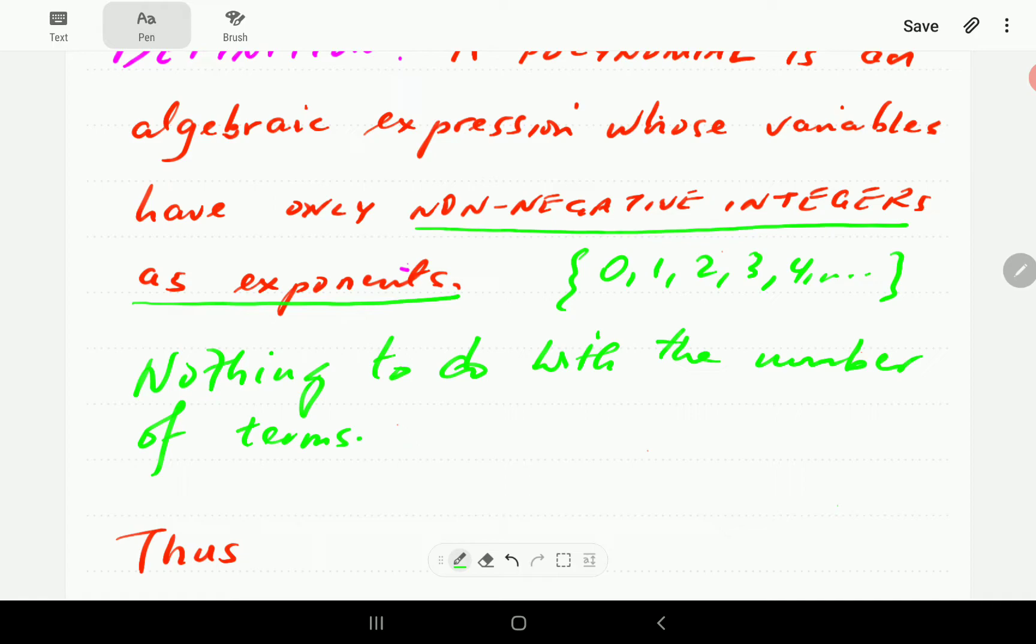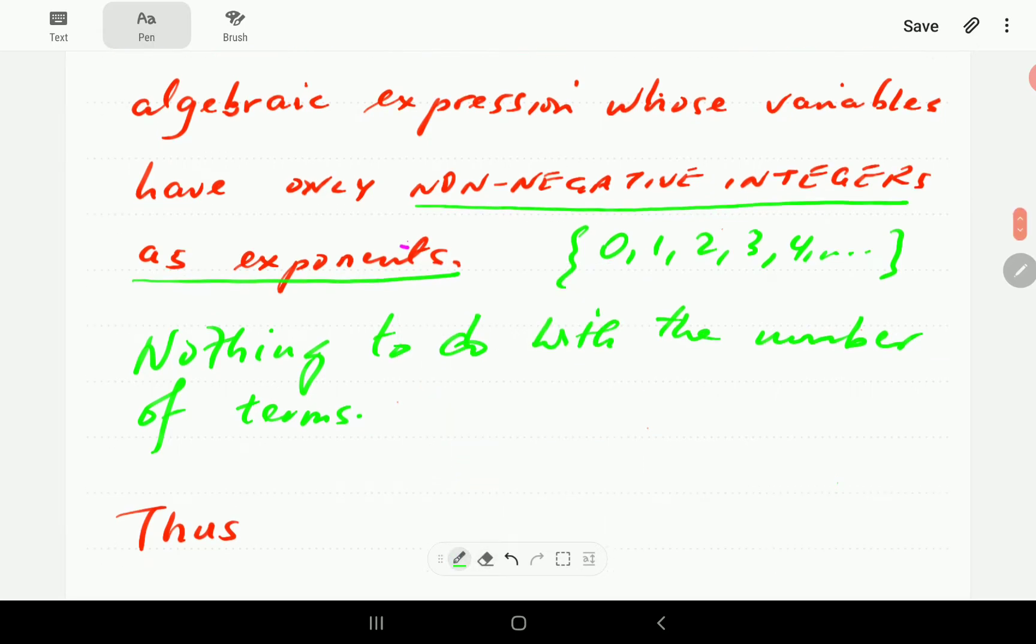And indeed, there are similar terms like binomial. In that case, the bi means two and it has something to do with the number of terms. But for polynomial, the definition has got nothing to do with the number of terms.